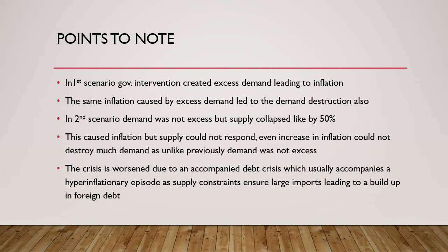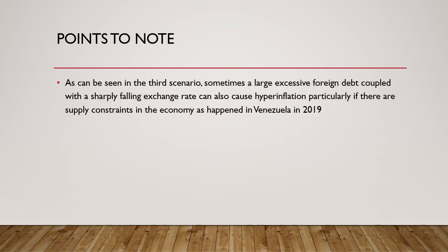In the third scenario — the second hyperinflationary scenario — we saw how a buildup in foreign debt coupled with a falling exchange rate caused a hyperinflationary scenario. This was again coupled with the limited productive capacity of the economy. We saw this scenario play out in Venezuela's hyperinflation in 2019.